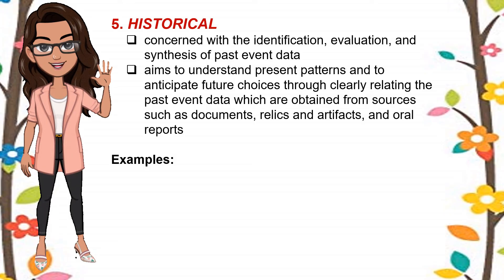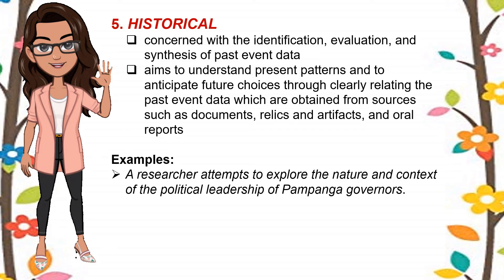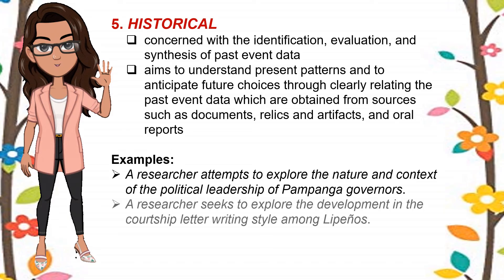The fifth kind is historical research, which is concerned with identification, evaluation, and synthesis of past event data. It aims to understand present patterns and to anticipate future choices through clearly relating the past event data, which are obtained from sources such as documents, relics, and artifacts, and oral reports. Examples: a researcher attempts to explore the nature and context of the political leadership of Pampanga governors, and a researcher seeks to explore the development in the courtship letter writing style among Lipeños.